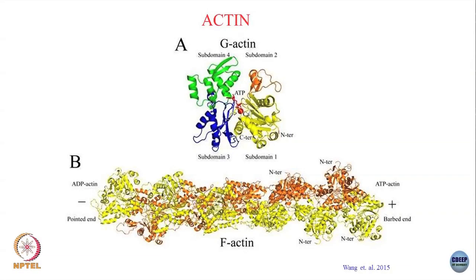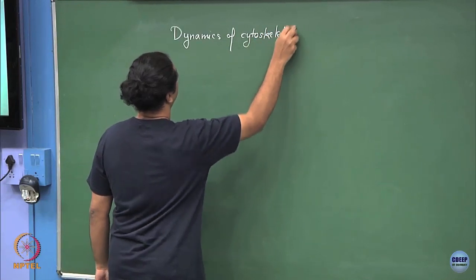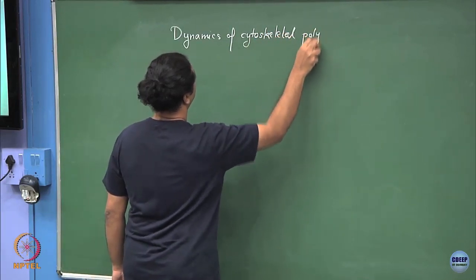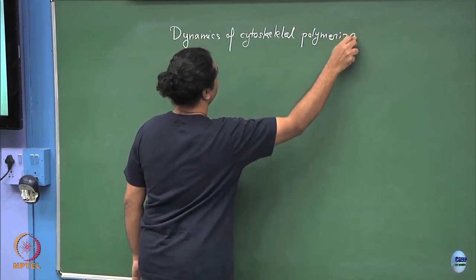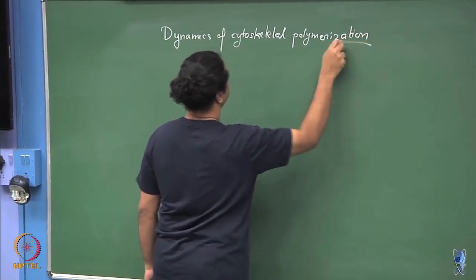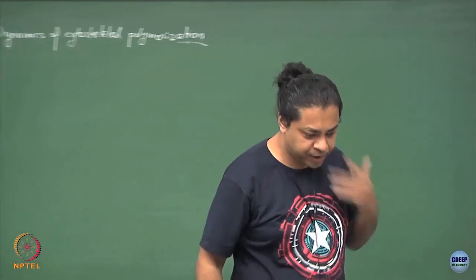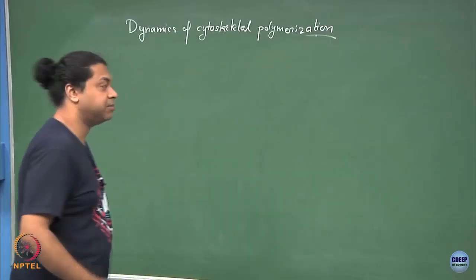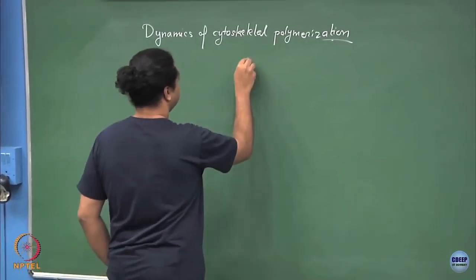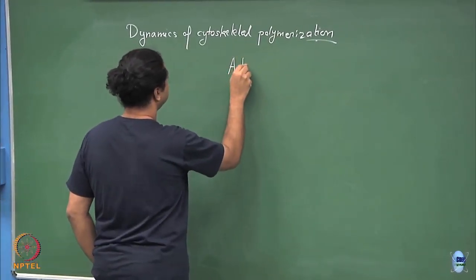What we will look at today is how to write down dynamics of cytoskeletal polymerization. Last class I was discussing a little bit about cytoskeletal actins and microtubules, and we will look at models of different levels of complexity to see what we can understand about polymerization.